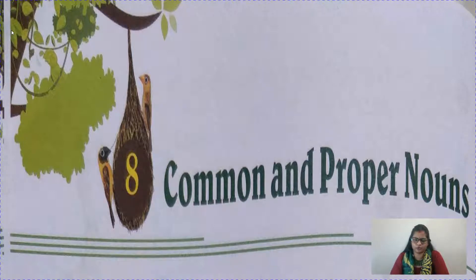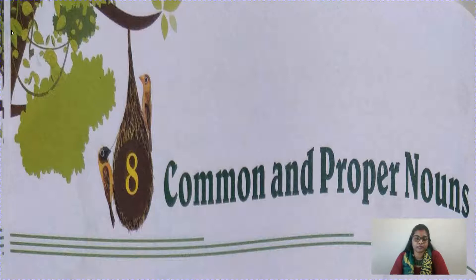Suppose you have a pet dog at your home. You can say 'I love my pet dog.' We don't know which dog you are talking about, so 'dog' is a common noun — it is the name of an animal. But when you say his name is Bruno, then it becomes a proper noun, because we know you are talking about Bruno specifically.